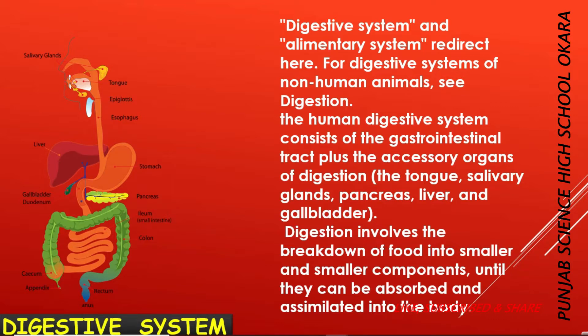The human digestive system consists of the gastrointestinal tract plus the accessory organs of digestion: the tongue, salivary glands, pancreas, liver, and gallbladder. Digestion involves the breakdown of food into smaller and smaller components, until they can be absorbed and assimilated into the body.